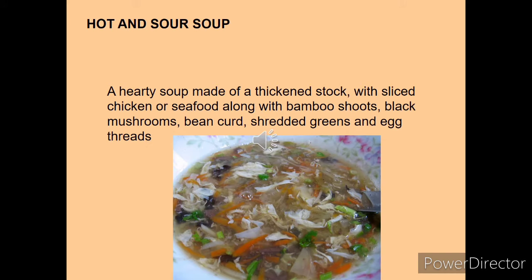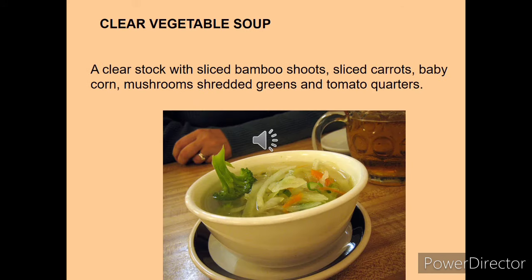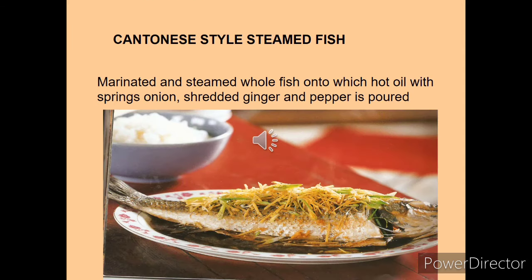Hot and sour soup is a very famous soup made from chicken or seafood along with bamboo shoots, mushroom and bean curd. Shredded greens and egg white threads are also added at the last. In most Chinese soups you will find egg white threads. A clear vegetable soup is also made with stock, bamboo shoots, carrot, baby corn, mushroom, shredded greens, vegetables and tomato quarters used for garnish.